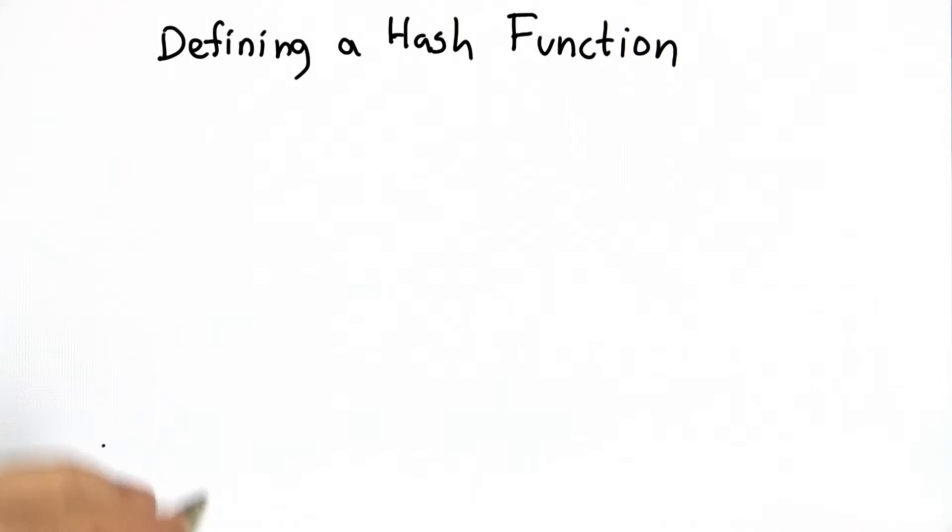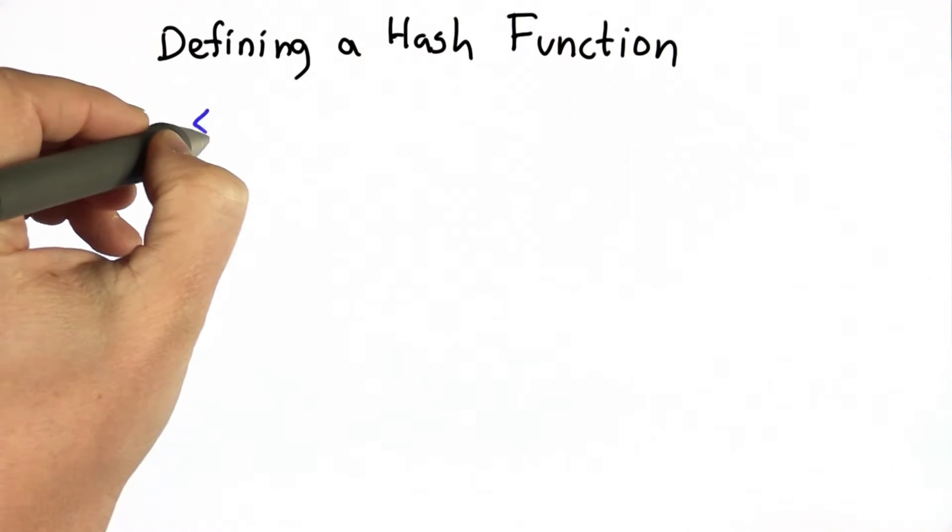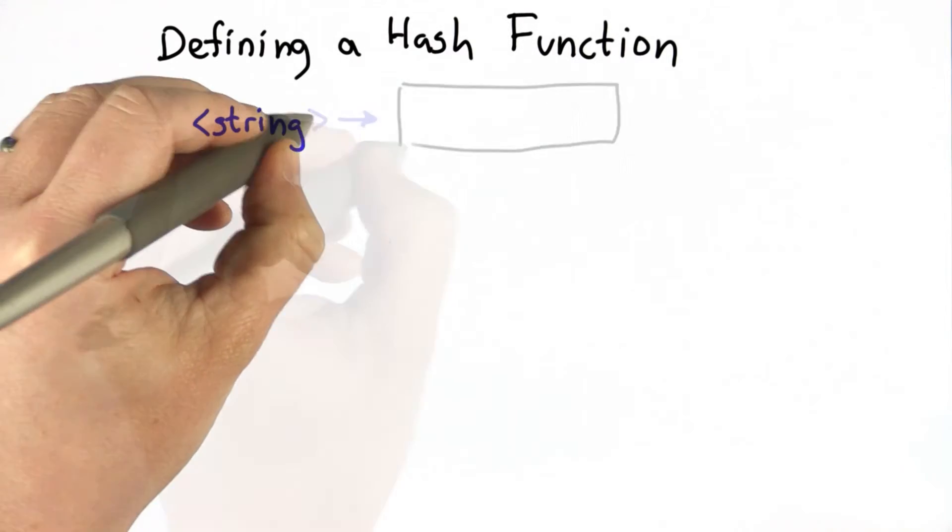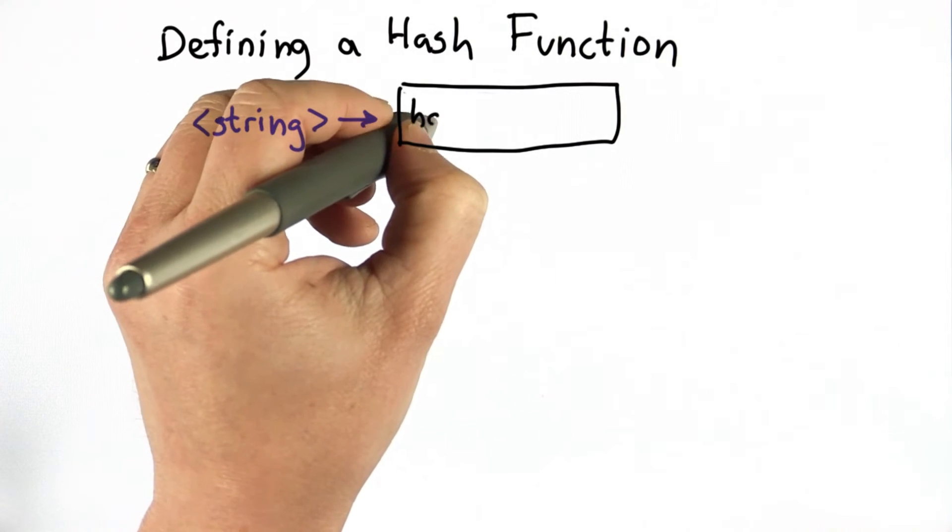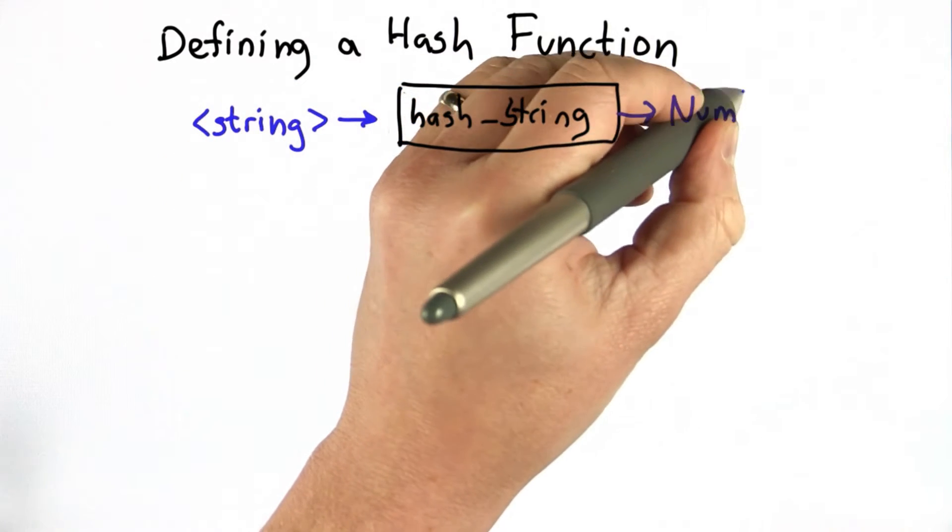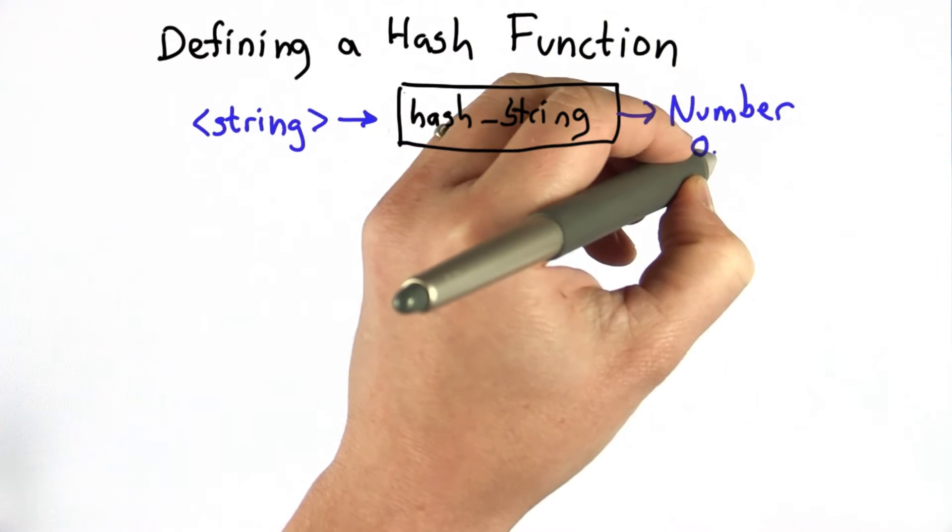So let's try to define a hash function that has these properties, and what we want the hash function to do is to take a string as its input. We'll call the hash function hash_string, and it will produce as output a number between 0 and b.